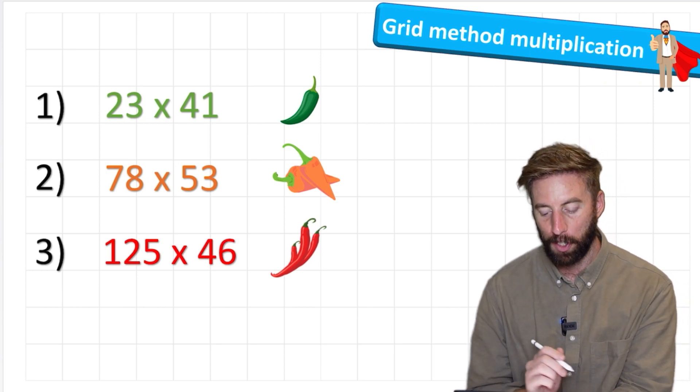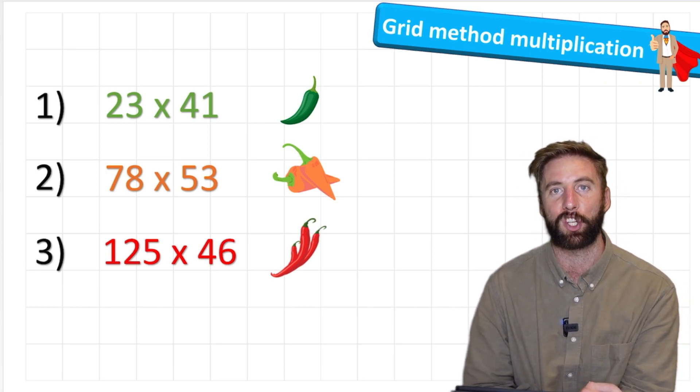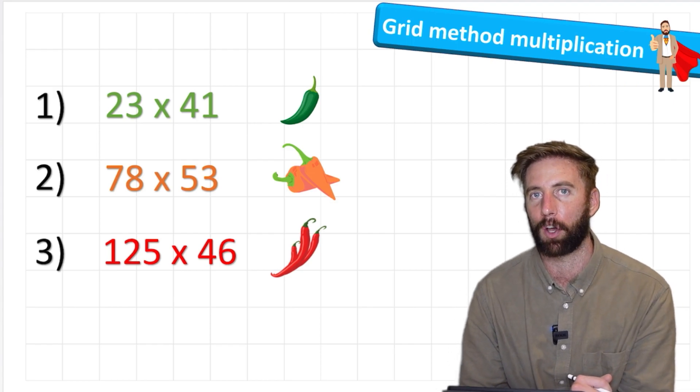Okay, we're going to look at these three questions. We've got a green, orange, and a red chili challenge. They get progressively harder as we go forward.